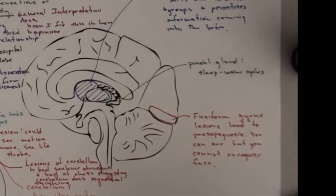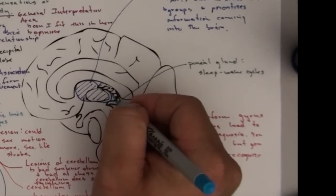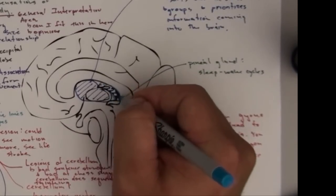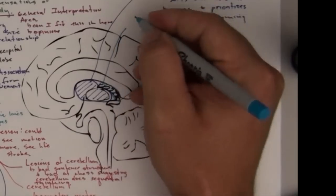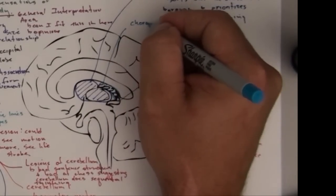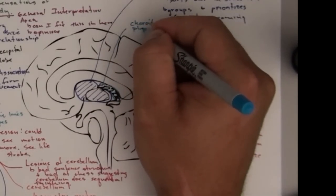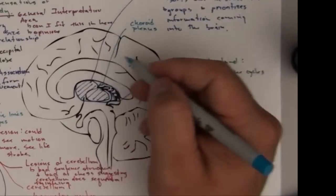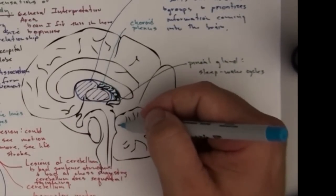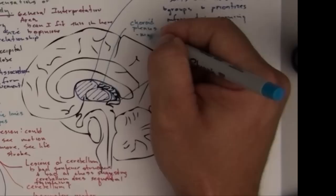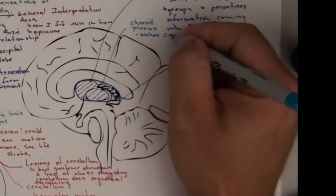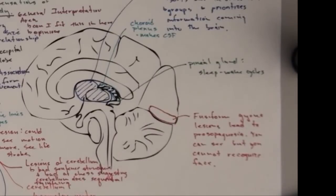This area right here is the choroid plexus. There's several places where there's choroid plexus. It's draped down from the ventricles. There's some down here as well. But this makes CSF, cerebrospinal fluid.